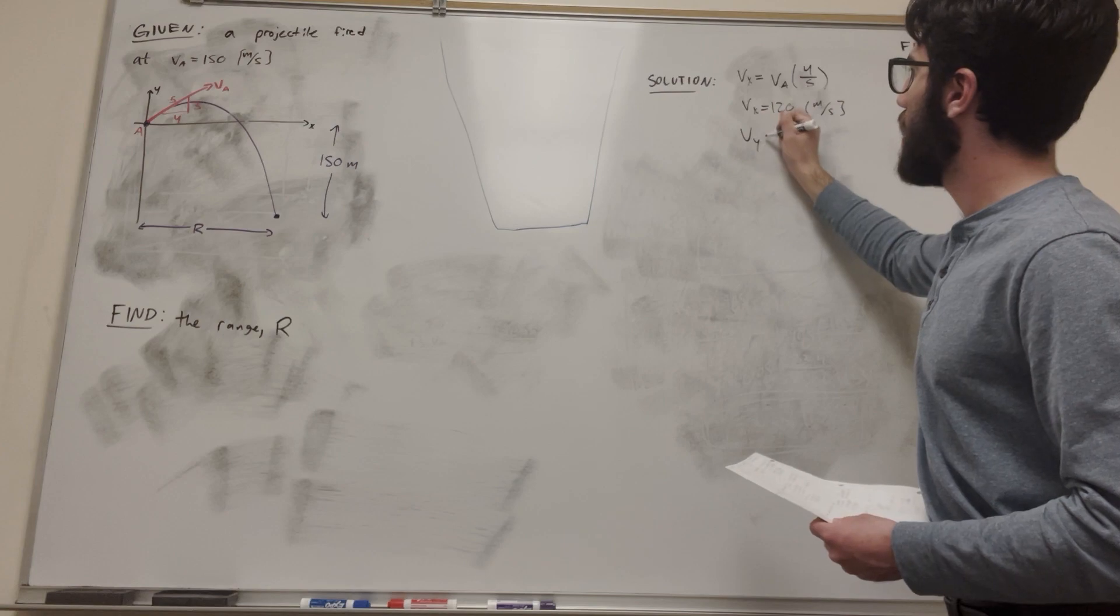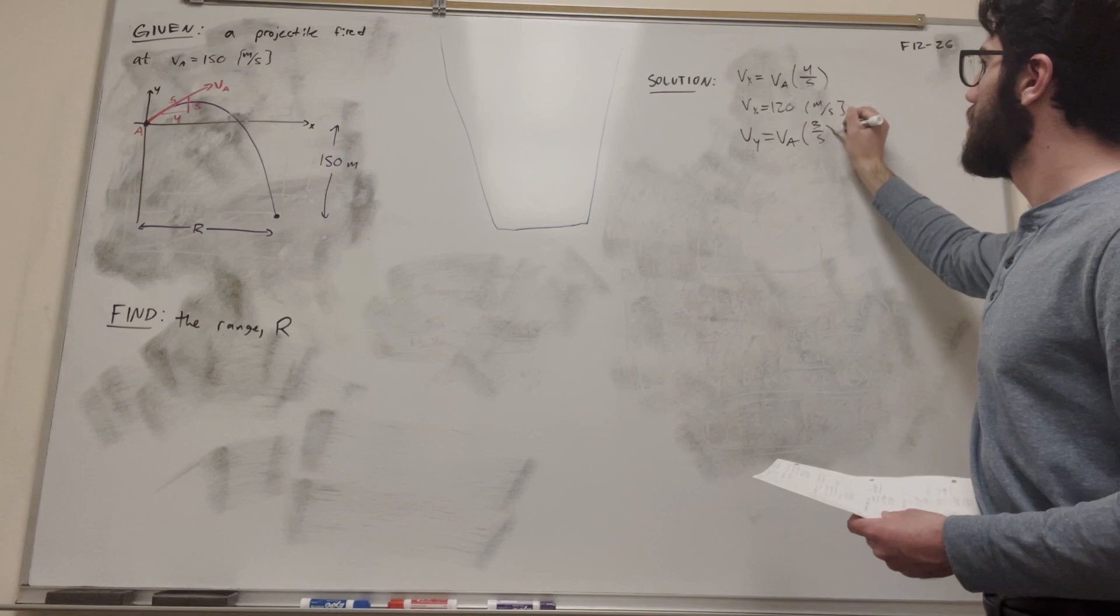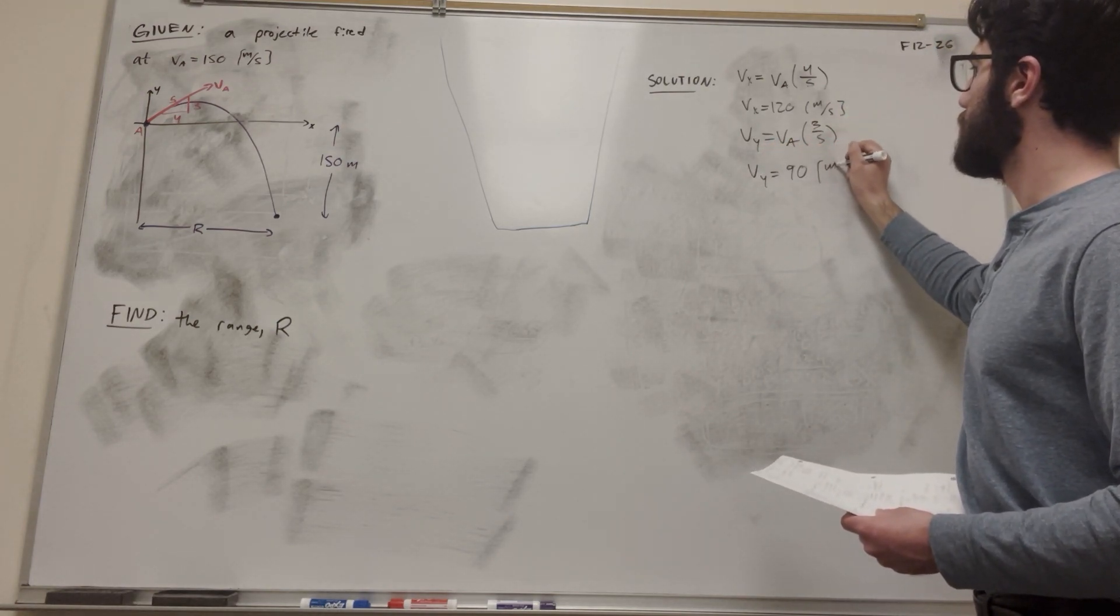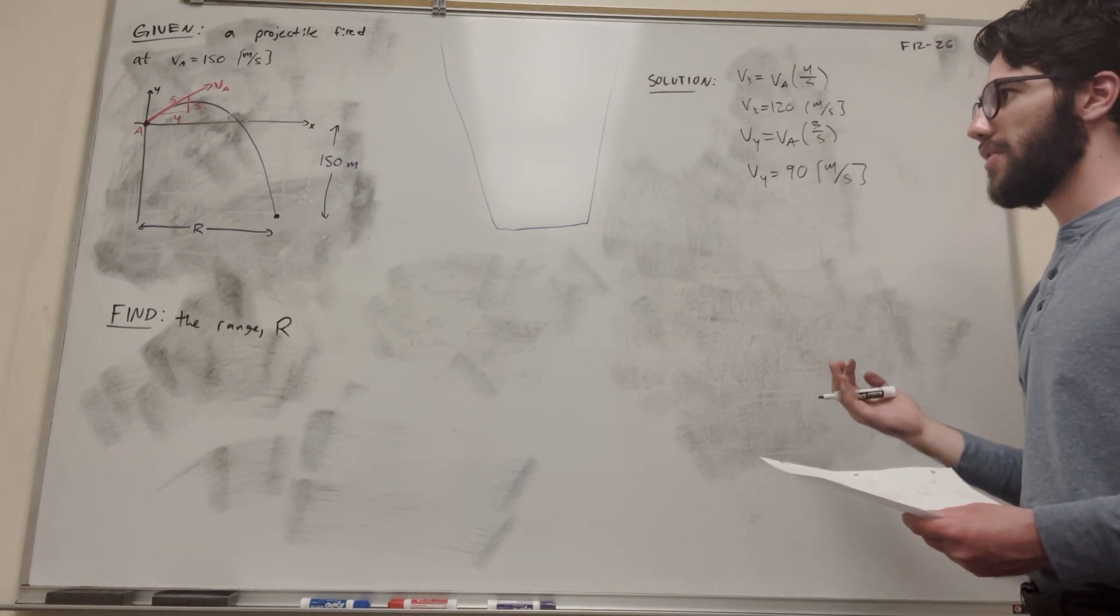So say we begin with vY, vY is going to be vA, but instead of 4 fifths, it's going to be 3 fifths, and that's going to become 90 meters per second. So we're getting these two components. Now we need to solve the problem.